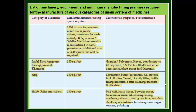Category 2: Arq (distillate). Space required: 100 square feet. Recommended equipment: distillation plant and storage stainless steel tank, boiling vessel, gravity filler, mortar filling machine.